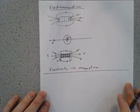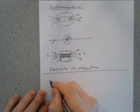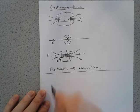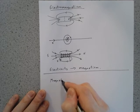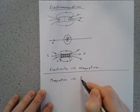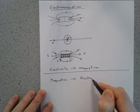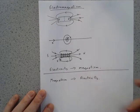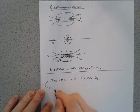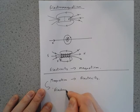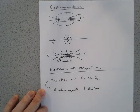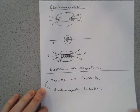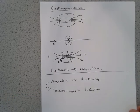Electromagnetic induction is kind of the other way around — it's where magnetism produces electricity. And that is what we call electromagnetic induction. We'll see what we mean as we go through and have a look at our demonstrations.